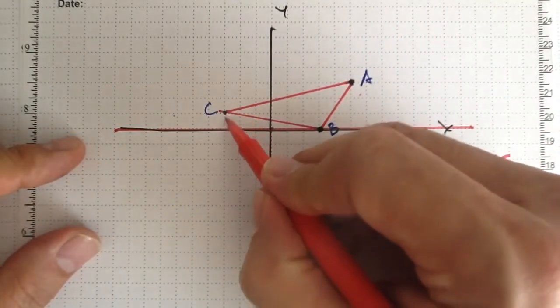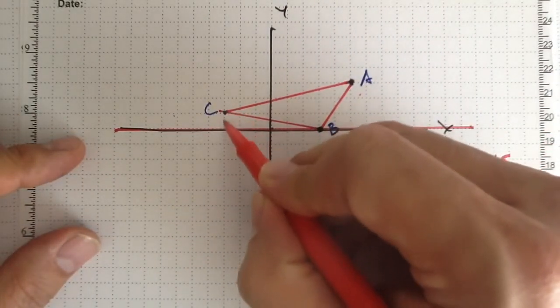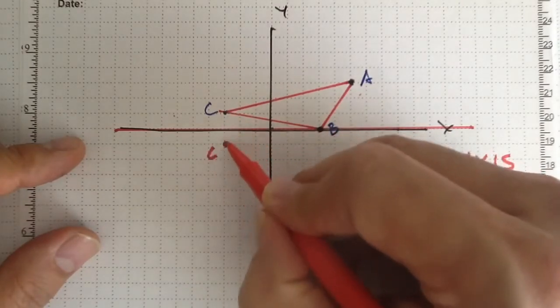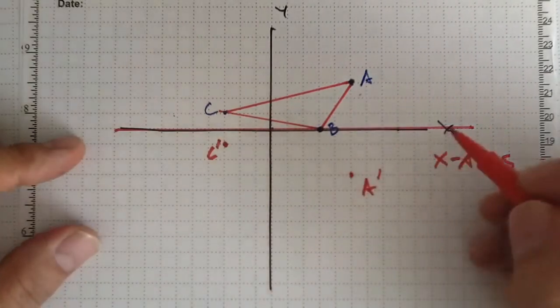If I do it with C, notice how C is 1 unit above the line of reflection, so I want to go 1 unit below the line of reflection and that's going to be C prime.